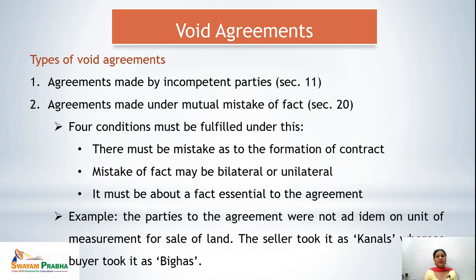Incompetent parties, as studied in previous lectures, include minors, persons of unsound mind, and persons disqualified by law. Persons of unsound mind may be permanently or temporarily so — for example, drunkards, lunatics, or insane persons. Persons disqualified by law include enemies of different countries or insolvent persons declared by the court. If any of these persons enter into an agreement, that agreement is known as a void agreement.